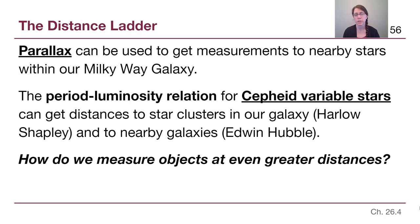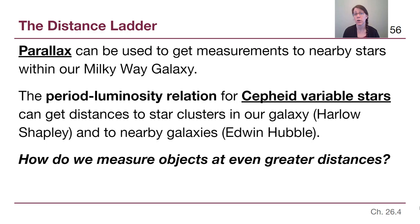We then talked about at the beginning of chapter 25 the period-luminosity relation for Cepheid variable stars, which helps us get the distance to star clusters containing these Cepheid variables — both inside our galaxy, the way Harlow Shapley did to map the Milky Way, and to nearby galaxies like Edwin Hubble did for Andromeda. But even that has a limitation: Cepheid variable stars are a single very bright star and we won't be able to measure those in distant galaxies.